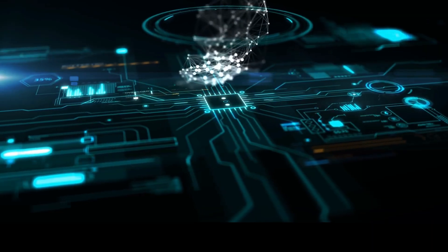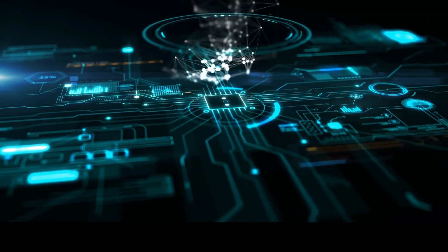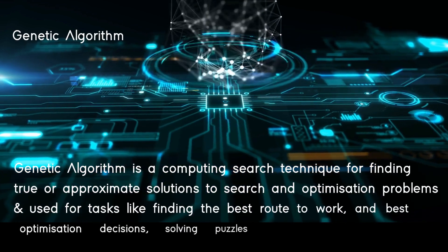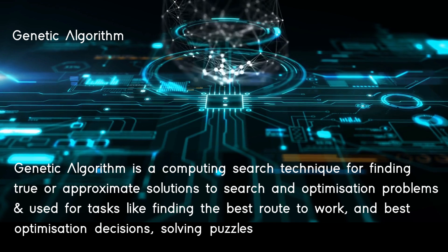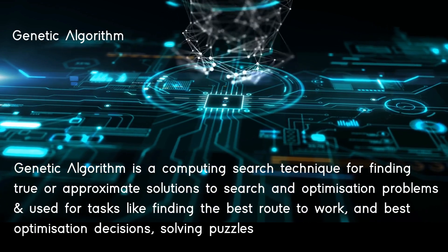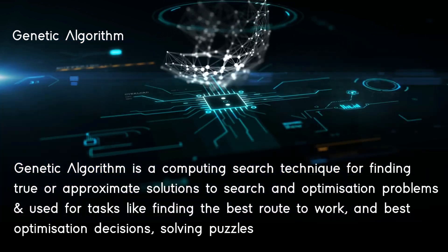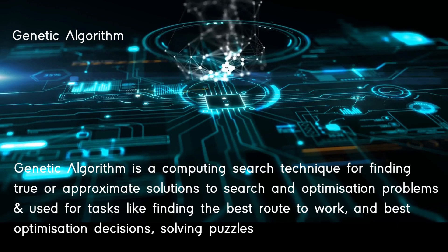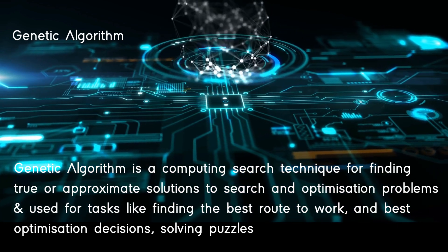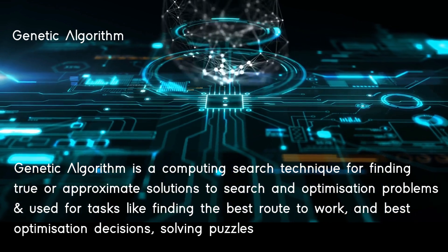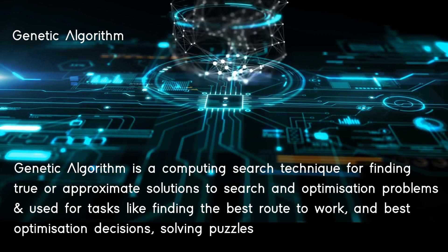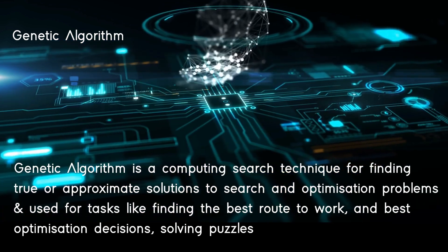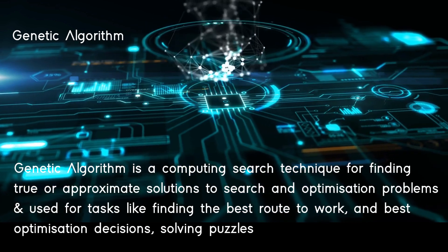Genetic algorithm is a computing search technique for finding true or approximate solutions to search and optimization problems. These subfields are used to solve problems by mimicking natural selection, and can be used for tasks like finding the best route to work, making the best optimization decisions, and solving puzzles.